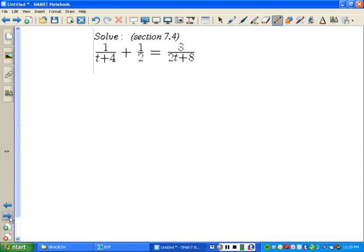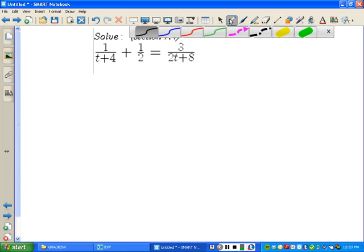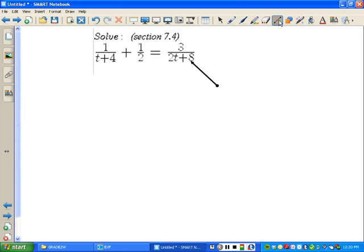Now, for the second one. The second one, you're going to want to factor 2T plus 8. You want to factor that. When you factor that, you get 1 over T plus 4 plus 1 half equals 3 over 2T plus 4.